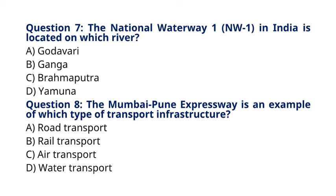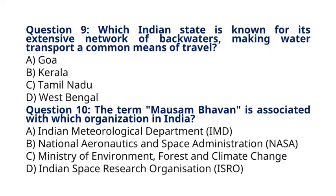Question 8: The Mumbai-Pune Expressway is an example of which type of transport infrastructure? Question 9: Which Indian state is known for its extensive network of backwaters, making water transport significant? The correct answer to question 9 is option B, Kerala. Kerala is known for its extensive network of backwaters, which are used for water transport.